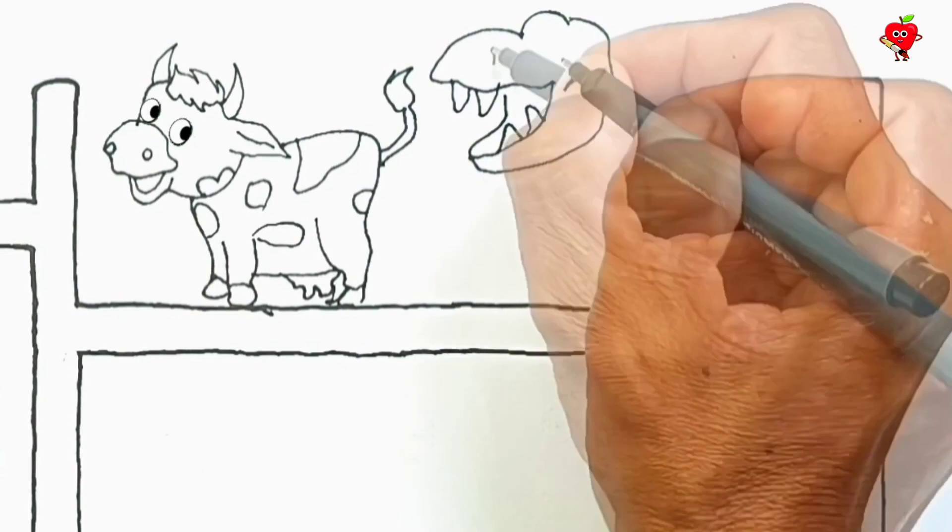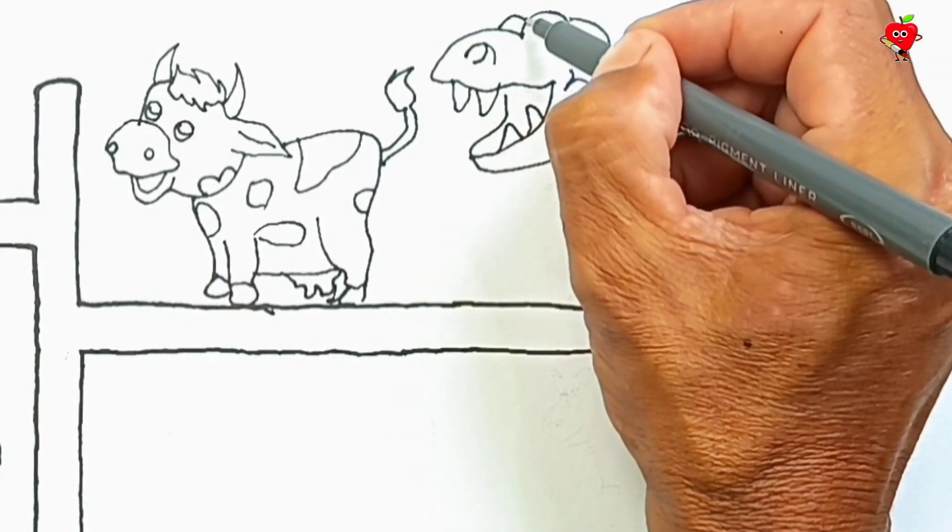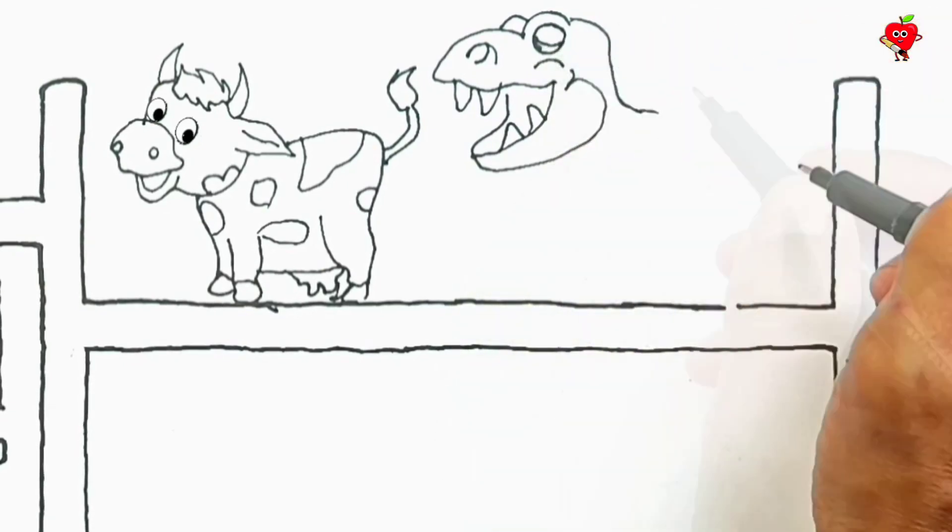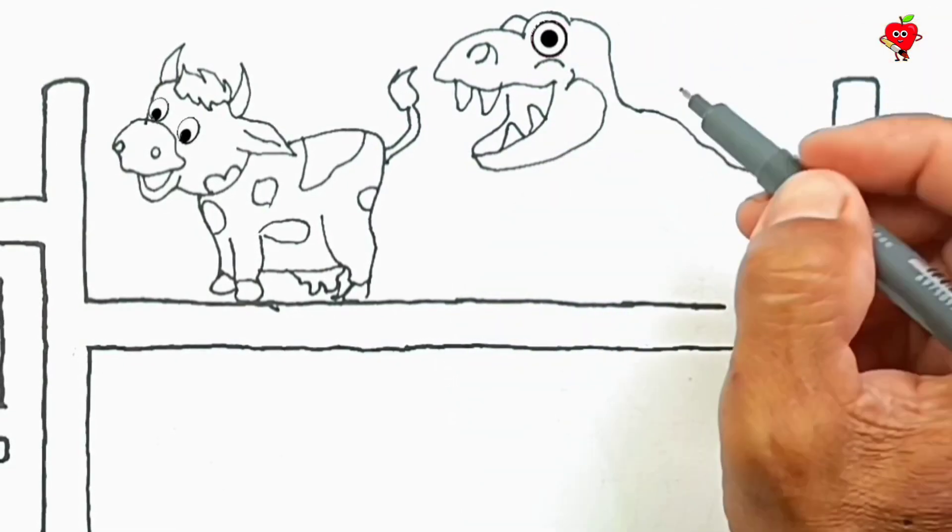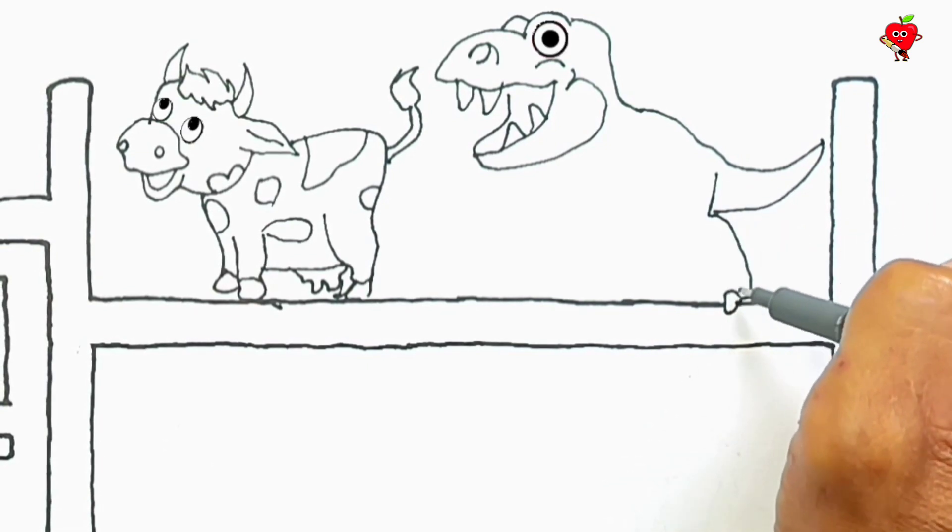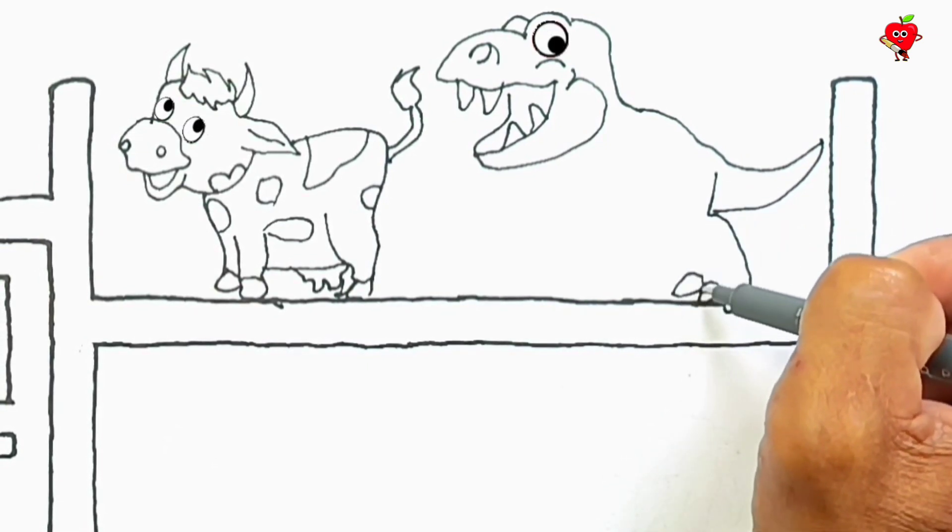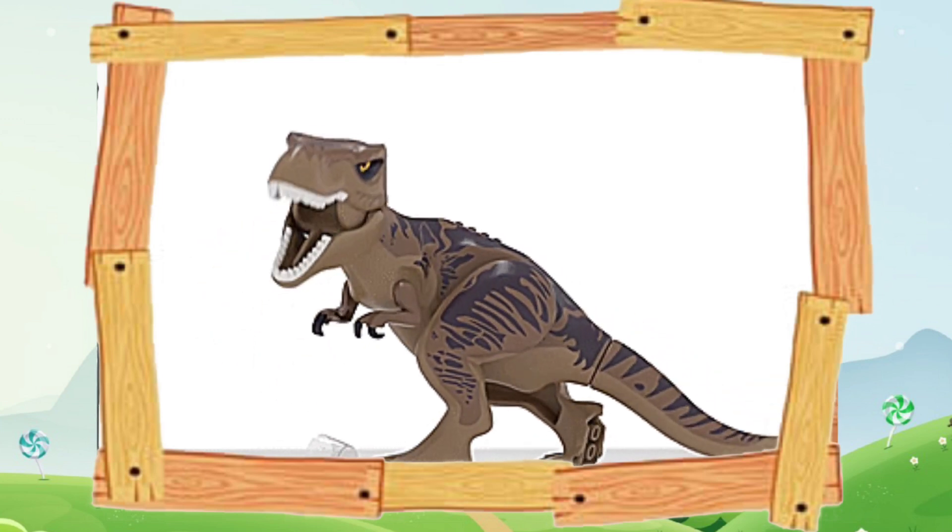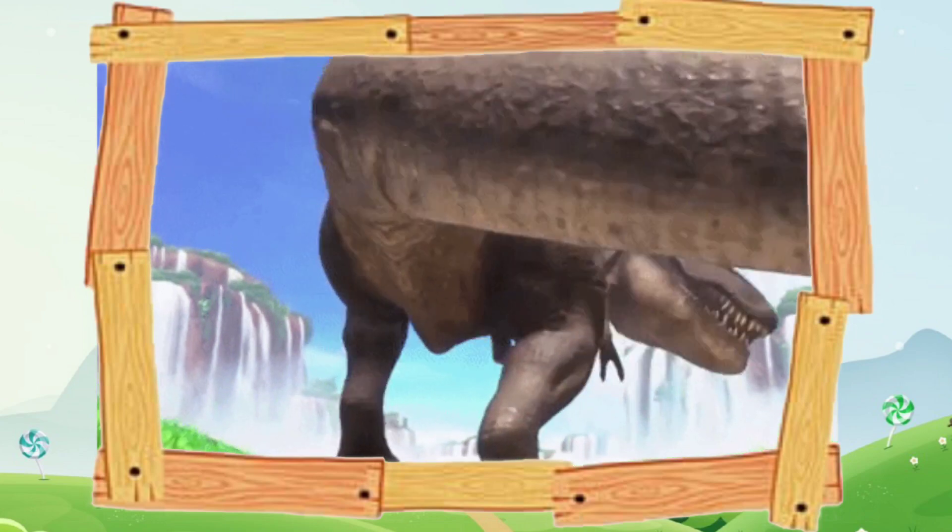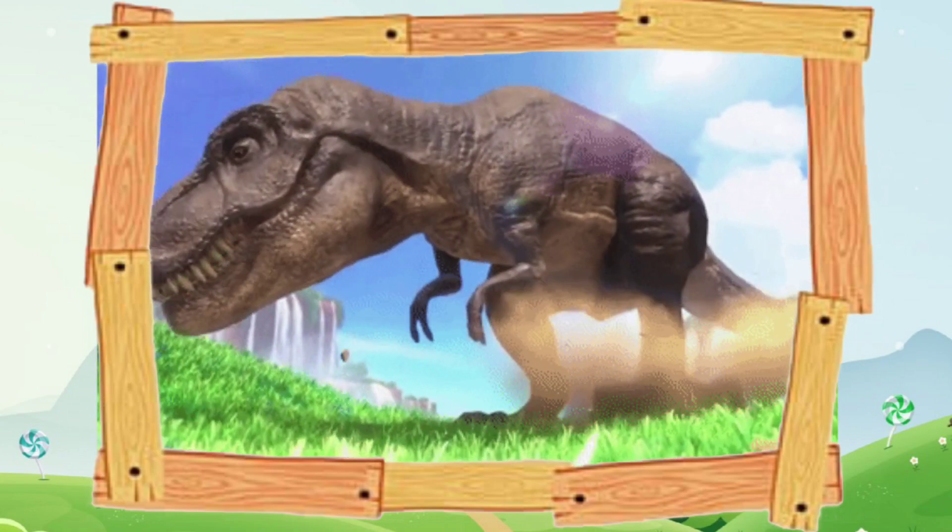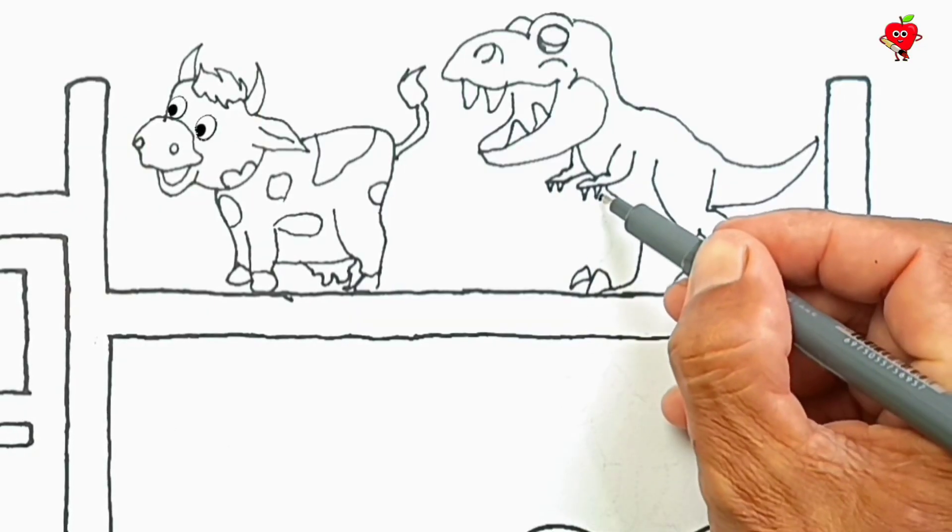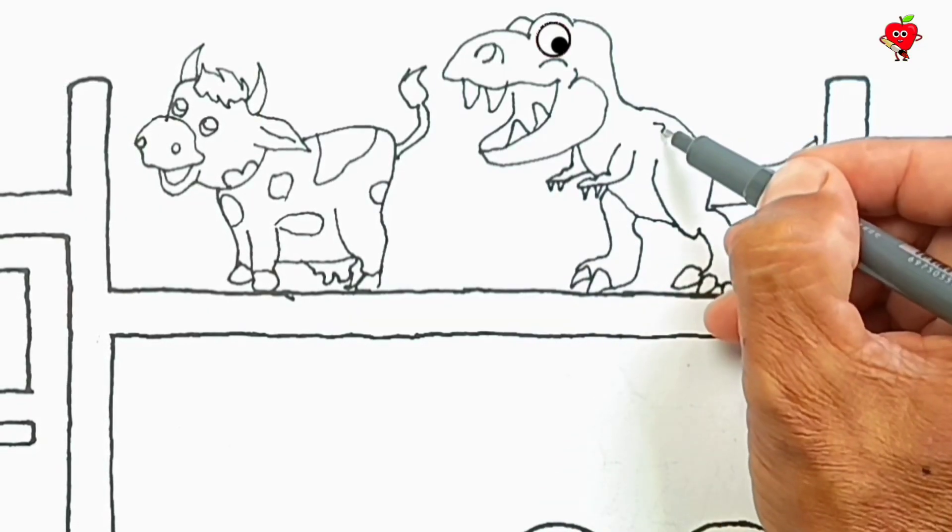His teeth are very sharp, like a big reptile. What's that? Wow, look, her eyes are so scary! These are dinosaurs. Wow, amazing! Very scary, but these animals are extinct.